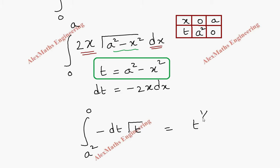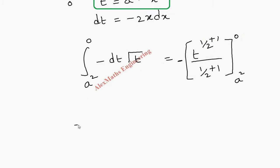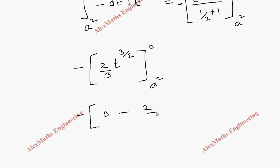Integrating root t — that is t to the power one half — gives t to the power 3/2 divided by 3/2, which equals 2/3 times t to the power 3/2. With the minus sign and limits from a squared to 0: the upper limit gives 0, minus the lower limit gives minus 2/3 times (a squared) to the power 3/2. The two minuses cancel to give plus 2/3 times a cubed. The final answer is 2a³/3.